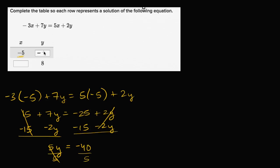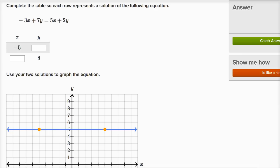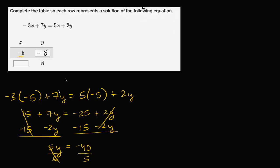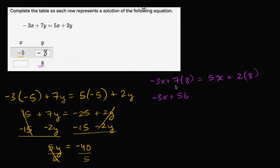So when x is equal to negative five, y is equal to negative eight. We can fill that in — y is going to be negative eight. Now we need to figure out what x equals when y is positive eight. Going back to the scratch pad, let's take the same equation but make y equal to positive eight. So we have negative three x plus seven times eight is equal to five times x plus two times eight.